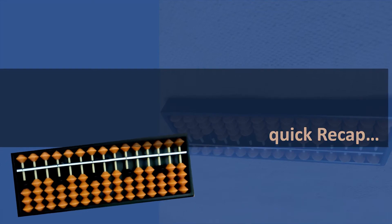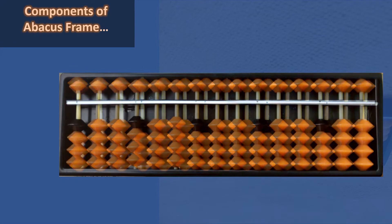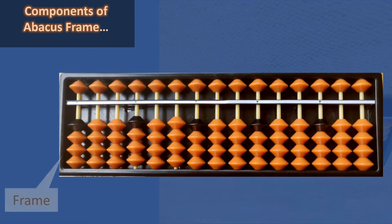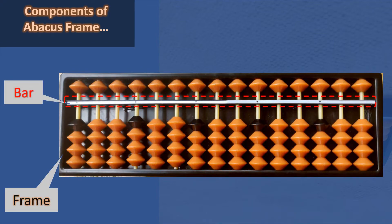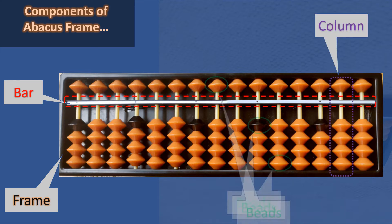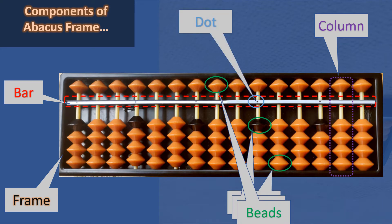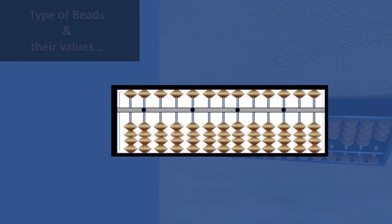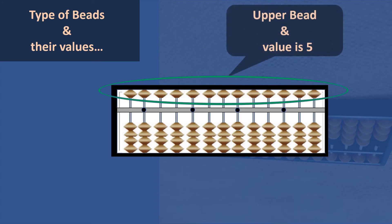Starting with a quick recap: components of the abacus frame. There are mainly four components — frame, bar (the horizontal line), columns (the vertical lines), beads, and dots. We can choose any of the dots when we start identifying a number on the abacus.